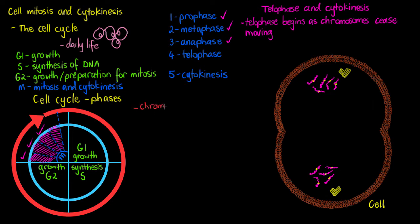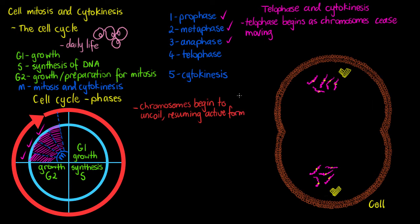The chromosomes that were tightly condensed as they were being pulled towards opposite ends of the cell are going to begin to unravel again. They'll uncoil so that they can become active and resume being available for transcription within the new cell.